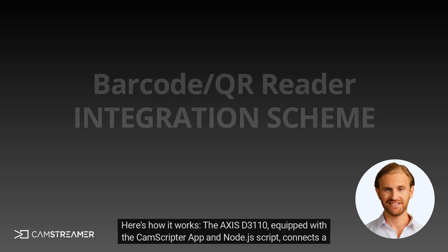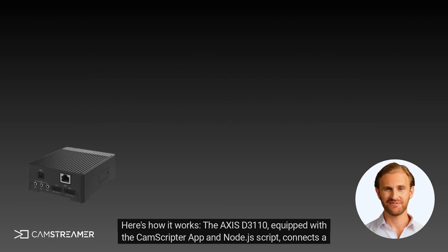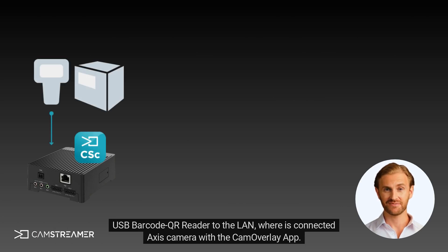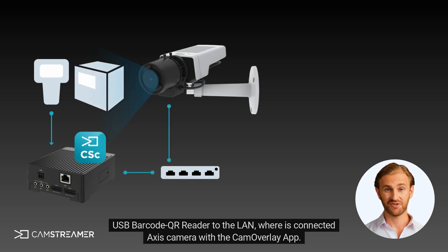Here's how it works. The Axis D3110, equipped with the CamScripter app and a NodeJS script, connects a USB barcode QR reader to the LAN, where it's connected to an Axis camera with the CamOverlay app.